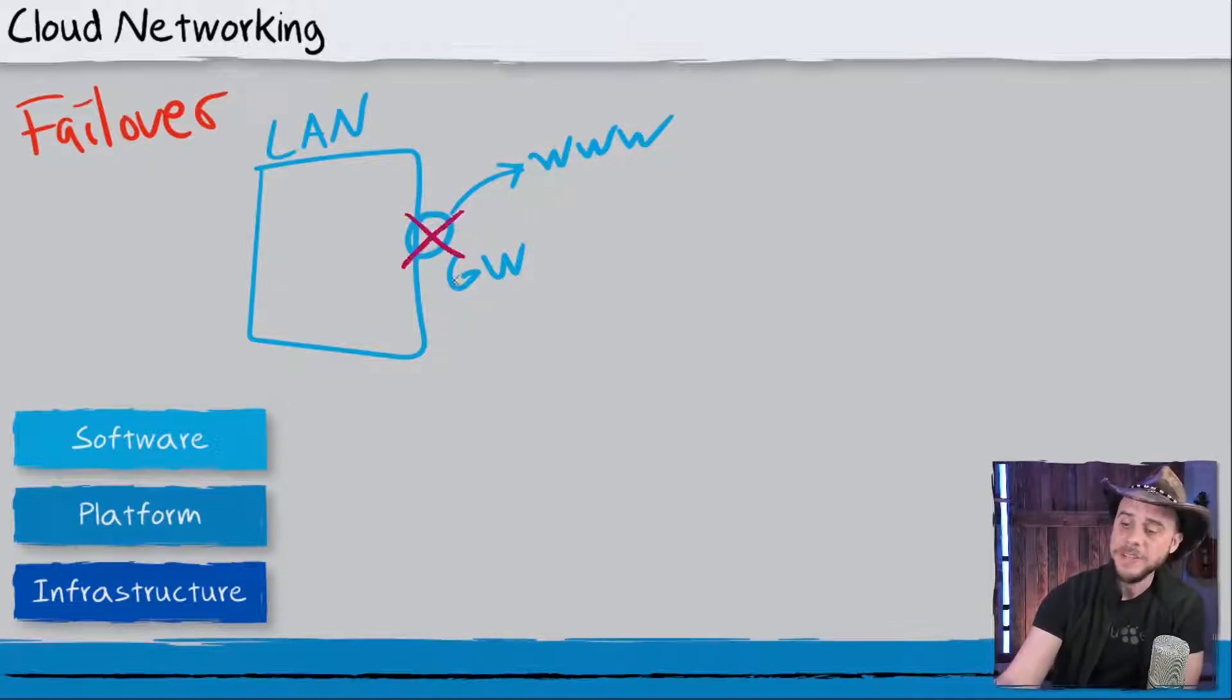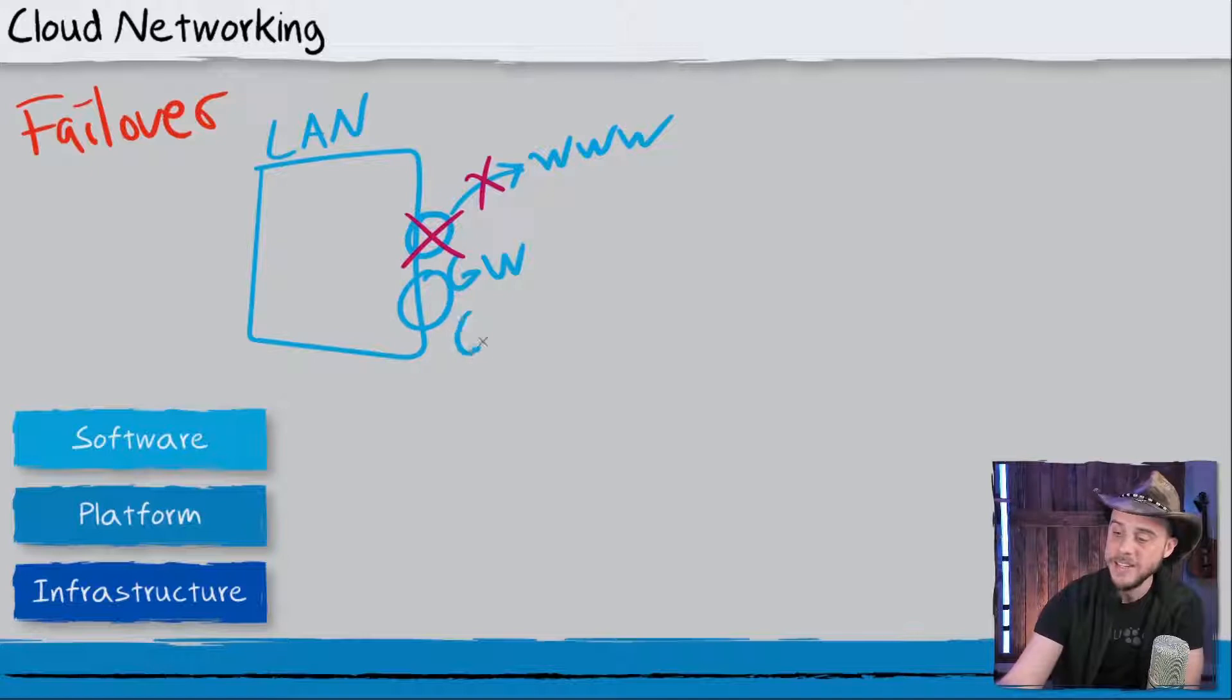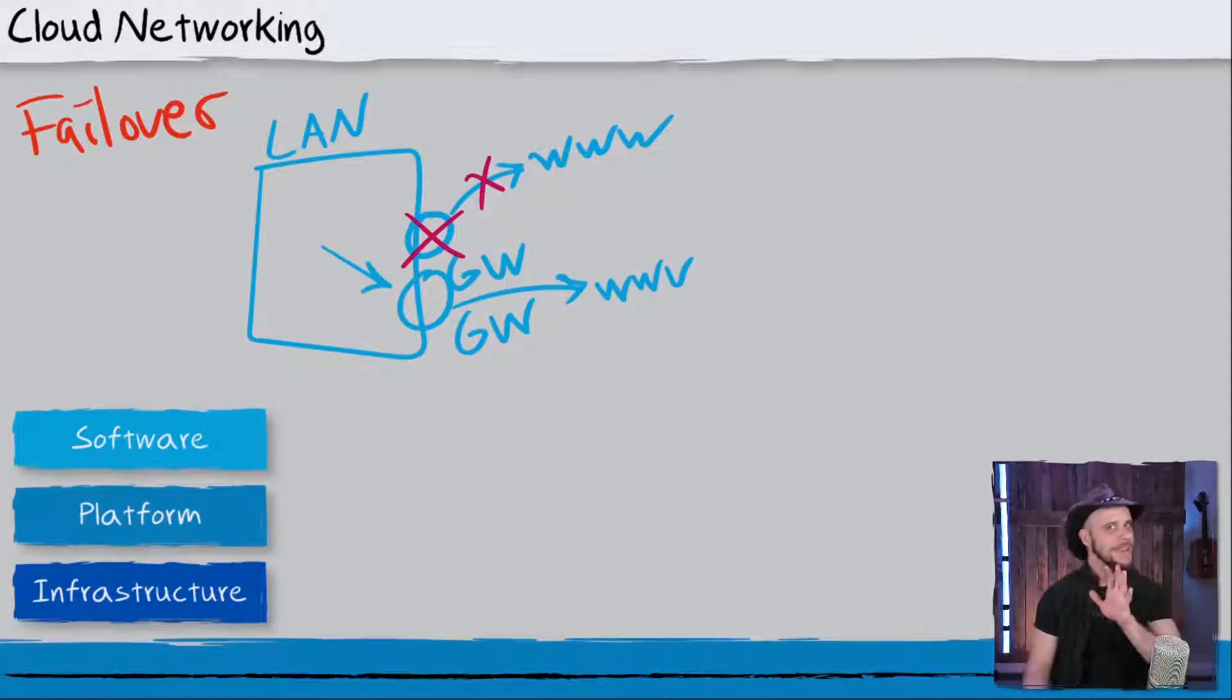And so if that resource dies, goes down, or maybe the path to it is lost, we now have no connectivity. Load balancing offers us a potential opportunity to have more than one device providing that functionality. So if we had a separate gateway right here, with potentially a separate connection to the internet, we would be able to redirect traffic over to that other gateway.